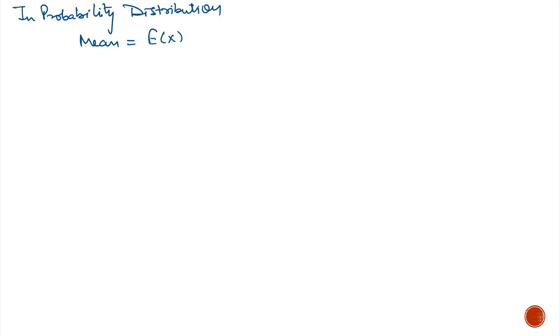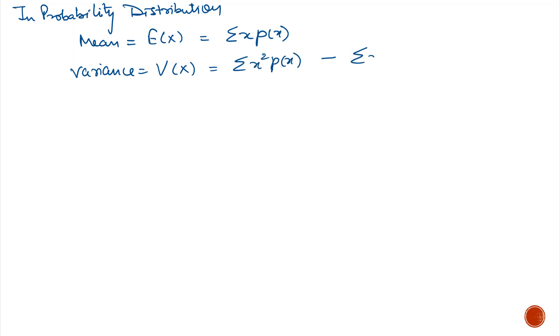In probability distribution, the mean, also known as the expected value, equals the summation of x times P(x). The variance, denoted as V(x), equals the summation of x squared times P(x) minus the summation of x times P(x), whole squared.